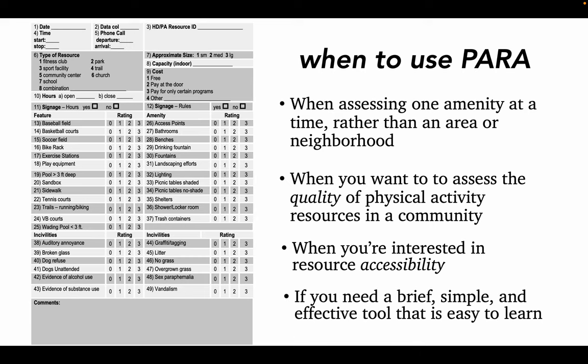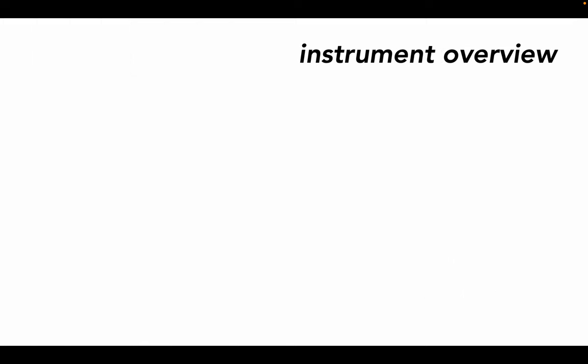And finally, PARA is a relatively short assessment. The full length of it is pictured here. It also employs an easy-to-learn rating system, and these elements make training others on this tool relatively simple and fast, including community members or volunteers. Now we'll go over some details of how to use the PARA instrument. We also recommend doing a full overview of the PARA protocol, which is available on the resources section of this module's page on the BEAT website.